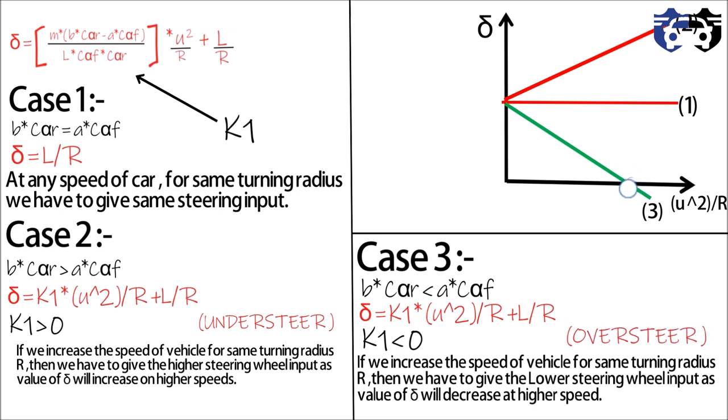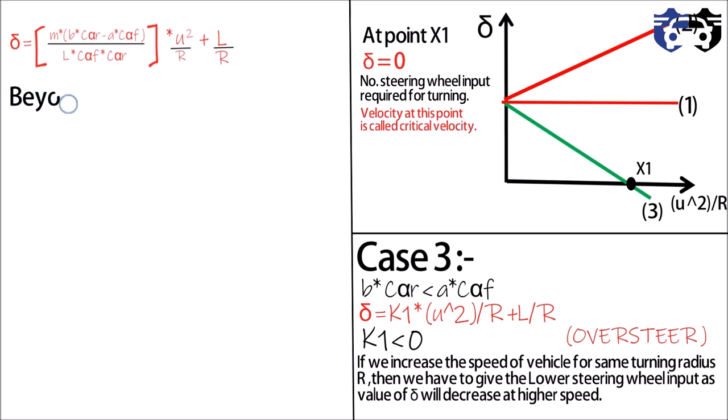Now you can see the curve for oversteer is intersecting at point X1. What's happening at point X1? At point X1, delta equals zero, which means no steering input is required for turning, and the velocity at this point is called the critical velocity. Now if you increase the velocity beyond X1, delta will be negative, which means you have to turn your steering wheel right for turning left and vice versa.